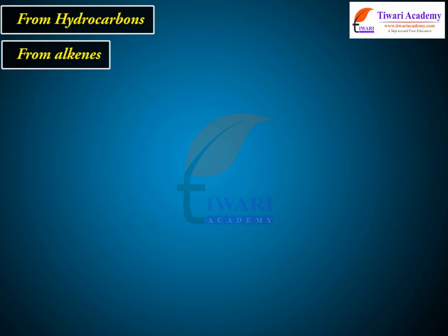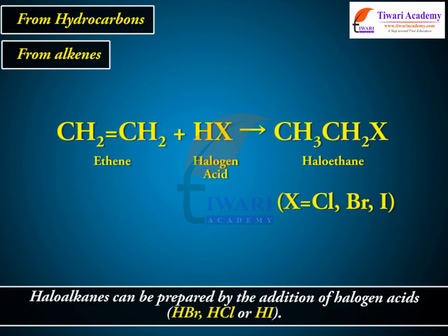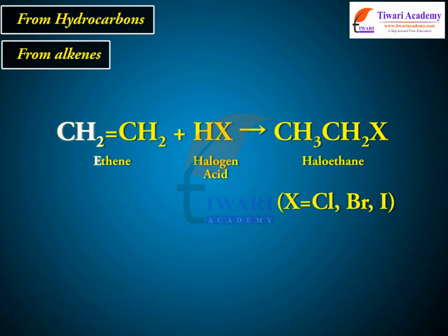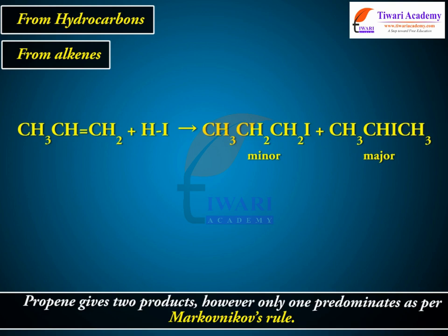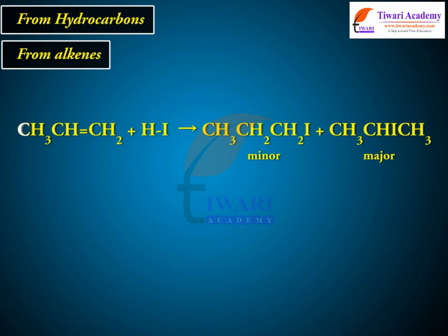From alkenes: haloalkanes can be prepared by the addition of halogen acids HBr, HCl, or HI. For example, CH3CH=CH2 plus HI gives CH3CH2CH2I as the minor product plus CH3CHICH3 as the major product, following Markovnikov's rule.